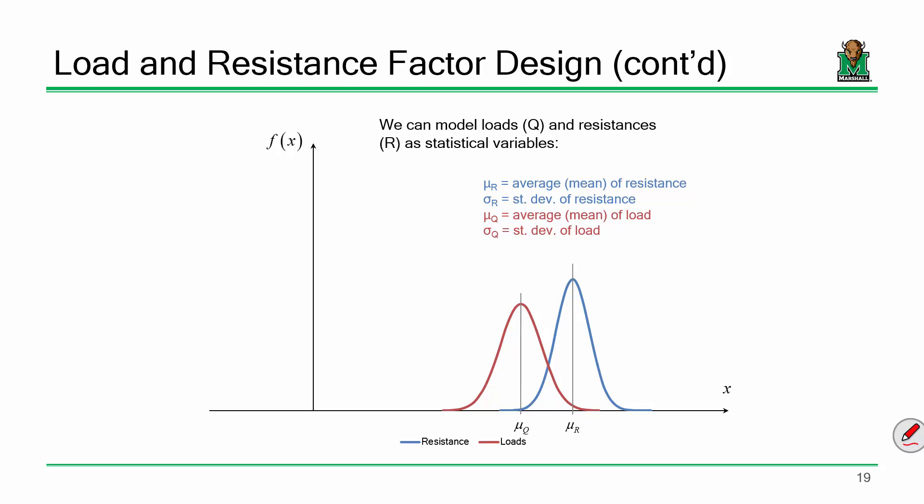Notice how the resistance curve is a little skinnier, a little taller. If we go back to the table example and start failing all the tables in this room, the standard deviation for resistance should be smaller than for loads. Standard deviation is a measure of how dispersed your data is. We, as engineers, should have a lot more control over the resistance than we do the loads — we're the ones designing the structures, but once the structures are out there, we don't have as much control over how much they're being loaded.